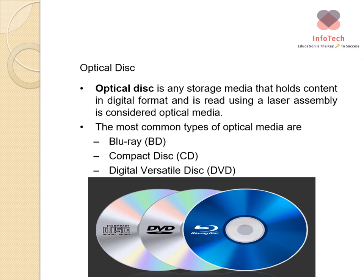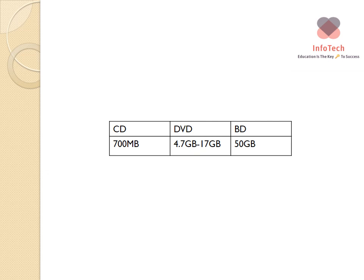Optical discs are storage media that hold content in digital format and are read using a laser assembly. The most common types of optical media are Blu-ray (BD), compact disc (CD), and digital versatile disc (DVD). Regarding storage capacity: a CD holds a maximum of 700 megabytes; a DVD ranges from 4.7 gigabytes to 17 gigabytes; and a Blu-ray disc holds a maximum of 50 gigabytes.